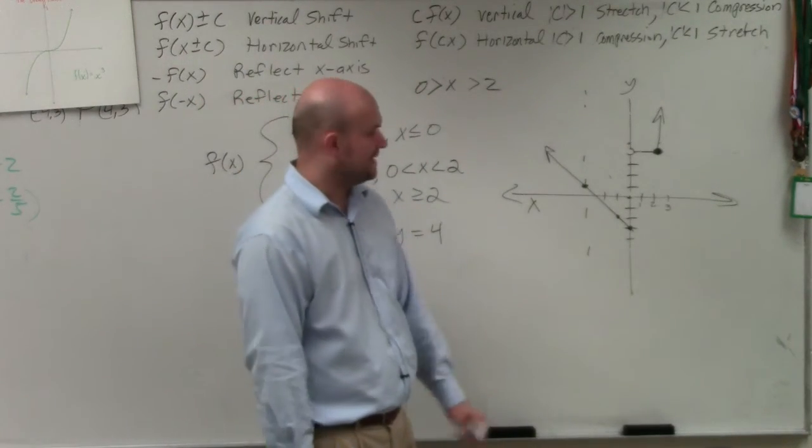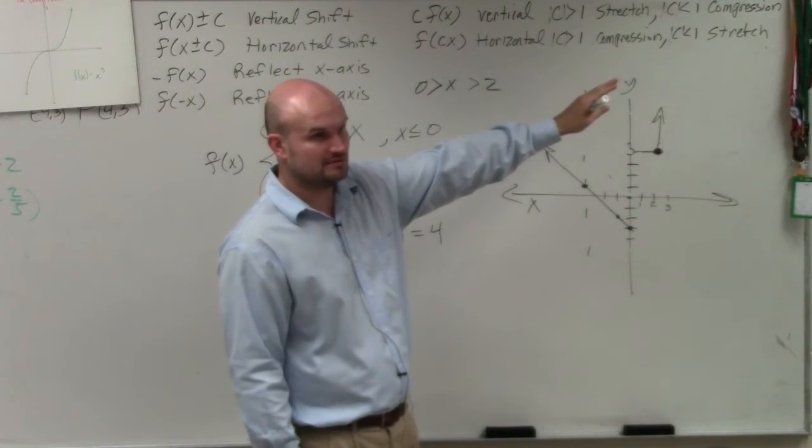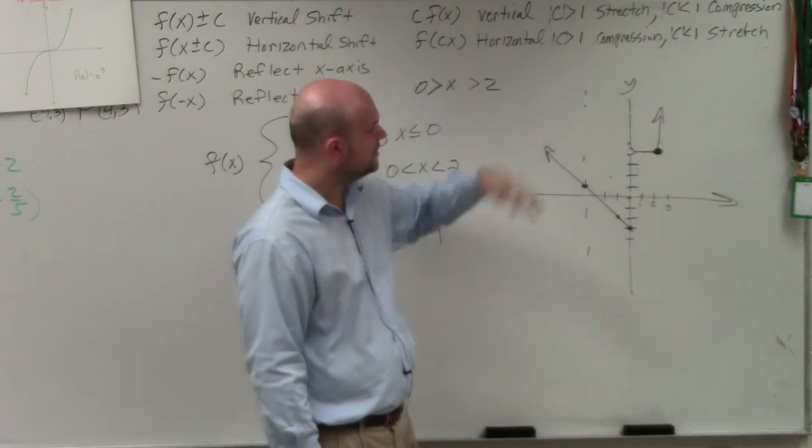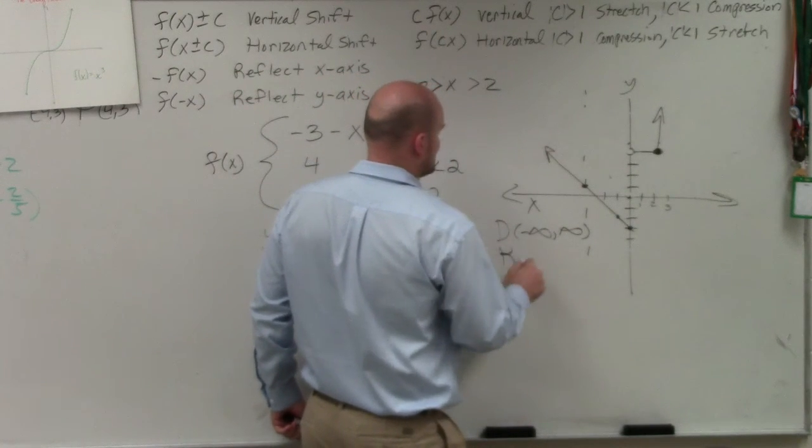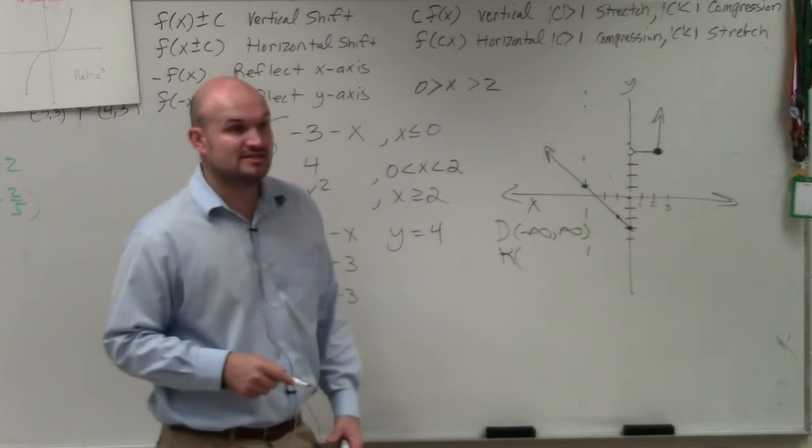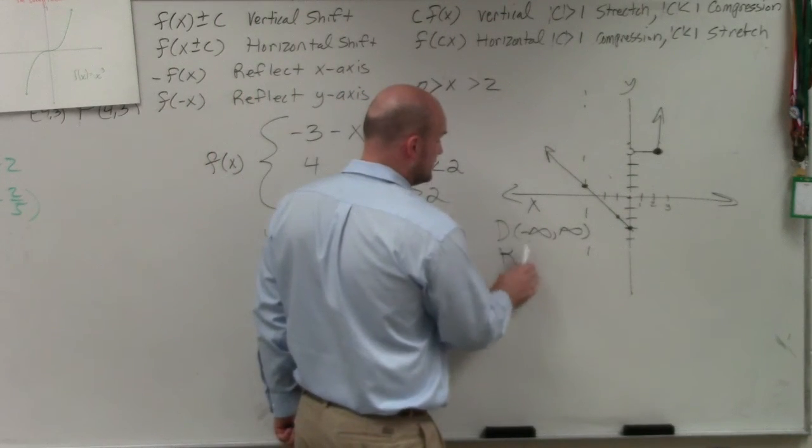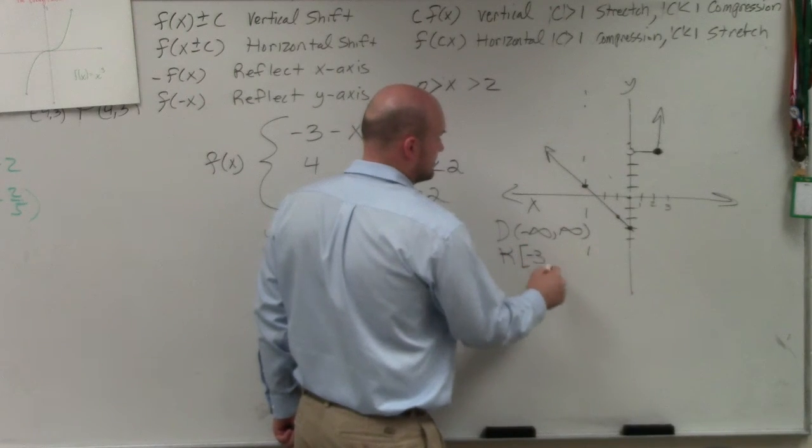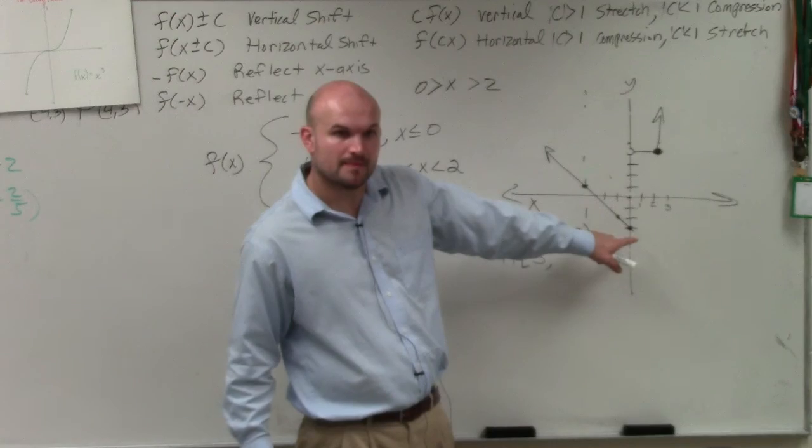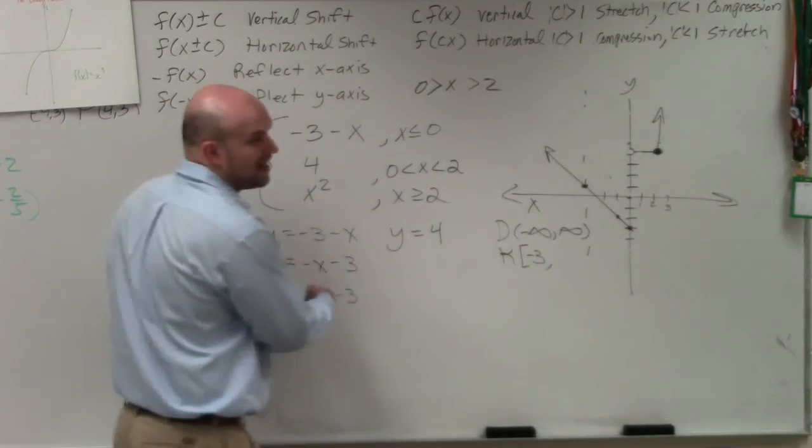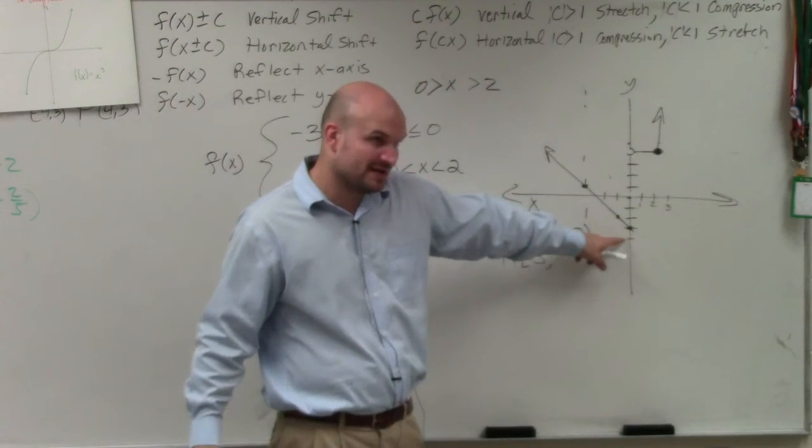Now let's go and look at the domain. Does the graph continue to the left? Yes. Does the graph continue to the right? Yes. The domain is all real numbers. So domain, we can say negative infinity to infinity. The range. How low does this graph go? Negative 3, which is included. So that's a bracket. Negative 3 is a point on the graph. Right? Whereas the other problem, it was an arrow. So it was infinity. So it wasn't included.